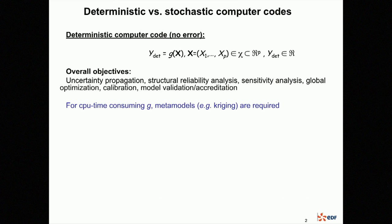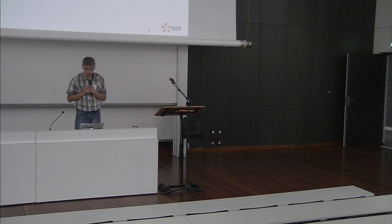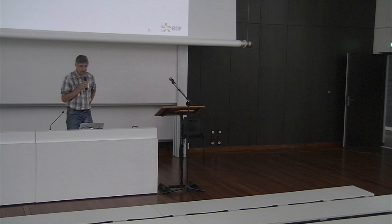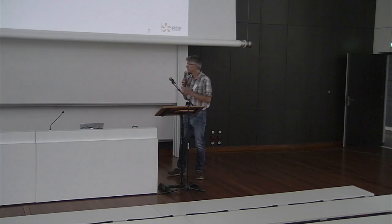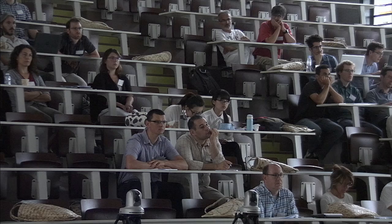This is the particularity of computer experiments: there is no error. In this talk I have P scalar inputs and I consider one scalar output. The main objective of uncertainty and sensitivity analysis is to make uncertainty propagation, reliability analysis of the output, and sensitivity analysis. I can also be interested in global optimization or calibration problems. When we deal with CPU time-consuming models, we have to find good algorithms — in this talk I will focus on algorithms based on metamodels.